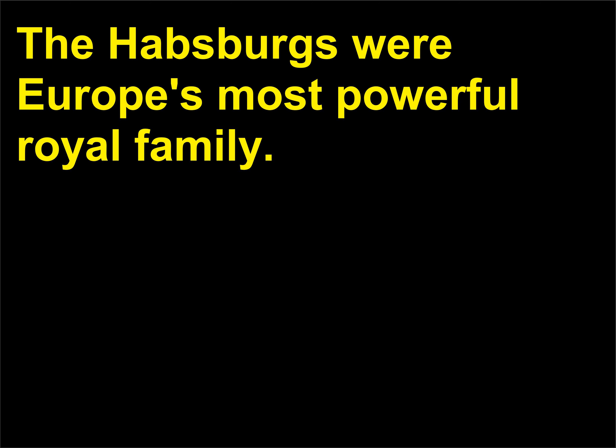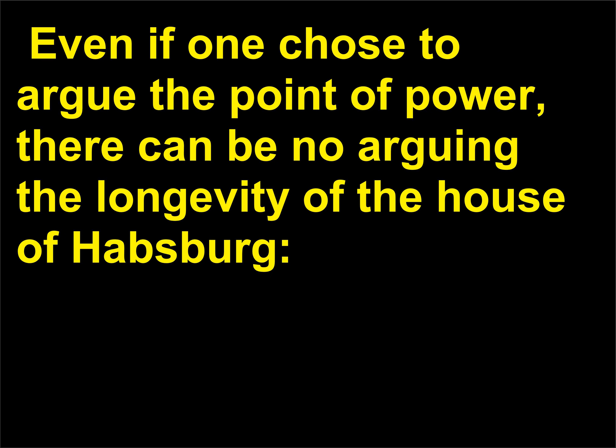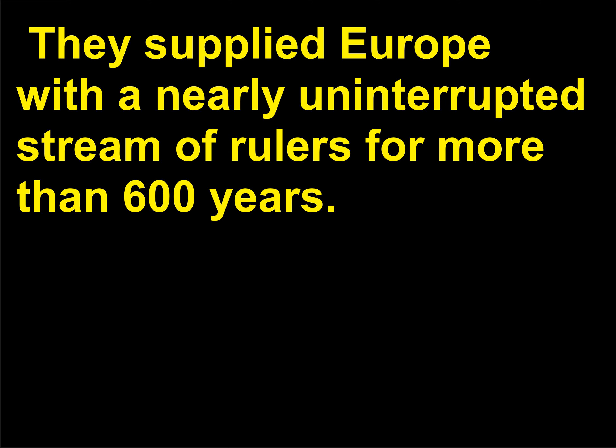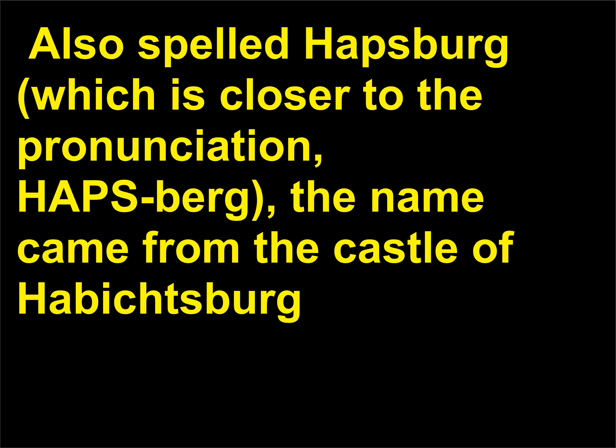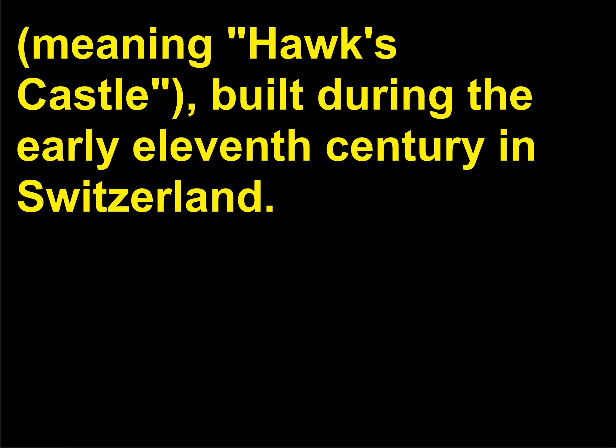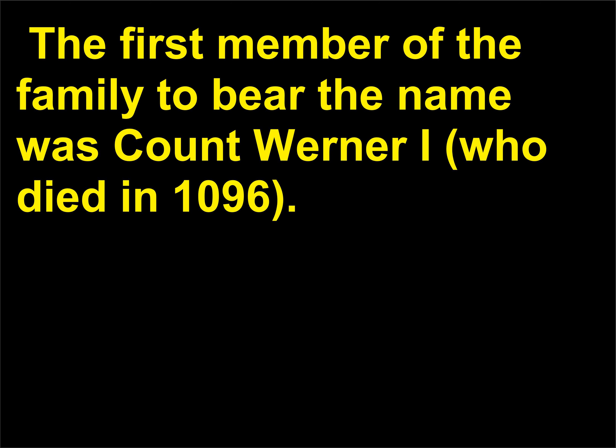Who were the Habsburgs? The Habsburgs were Europe's most powerful royal family. Even arguing the point of power, there can be no arguing the longevity of the House of Habsburg — also spelled Habsburg, which is closer to the pronunciation. They supplied Europe with a nearly uninterrupted stream of rulers for more than 600 years. The name came from the castle of Habitsburg. The first member of the family to bear the name was Count Werner I, who died in 1096.